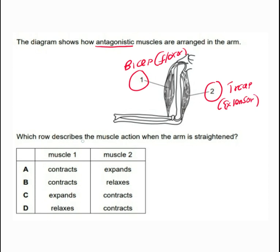So which row describes the muscle action when straightening the arm? When you straighten the arm, it comes down so that it becomes straight like this. When you are straightening the arm, we need to know what each muscle is doing.